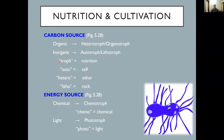For studying purposes, it helps to understand the roots of these words. 'Troph' means nutrition or food. 'Hetero' means other, so heterotroph means 'other food' or 'other nutrition.' 'Litho' means rock or earth. These word roots make it much easier to remember the classification system.